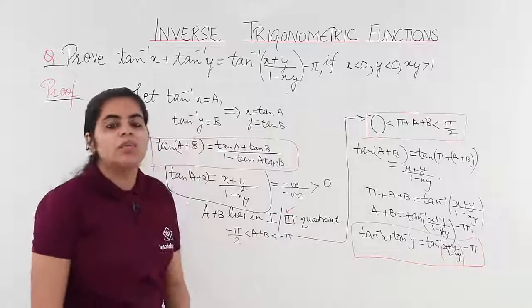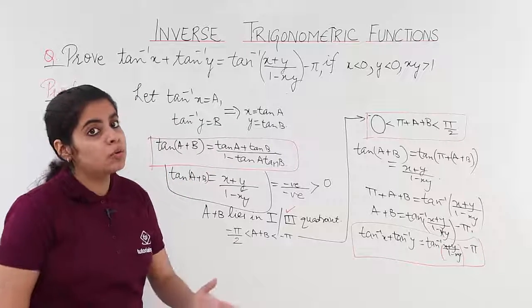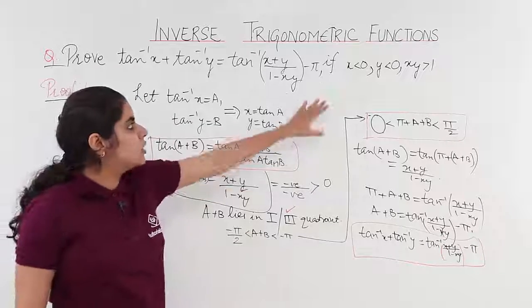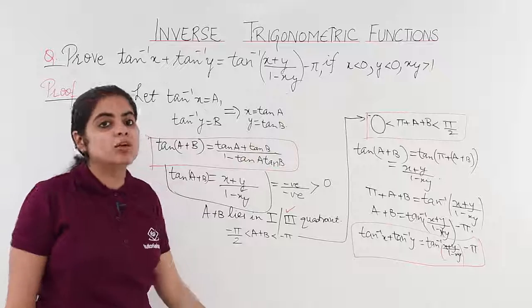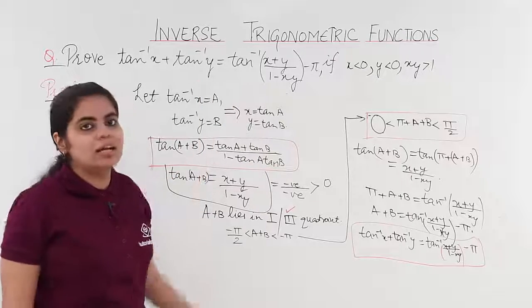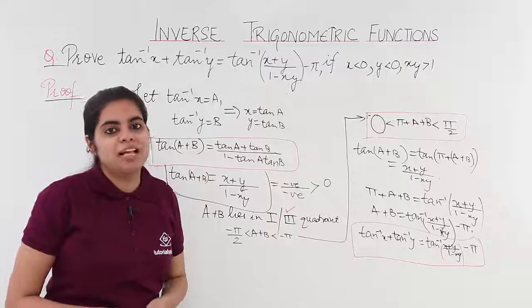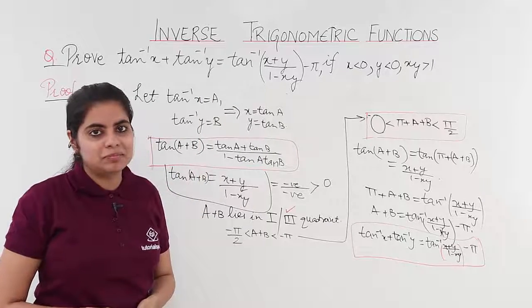So the final result is: tan⁻¹x + tan⁻¹y = tan⁻¹((x + y)/(1 − xy)) − π. In this video we saw the proof wherein the conditions x < 0, y < 0, and xy > 1 give this modified formula for tan⁻¹x + tan⁻¹y.